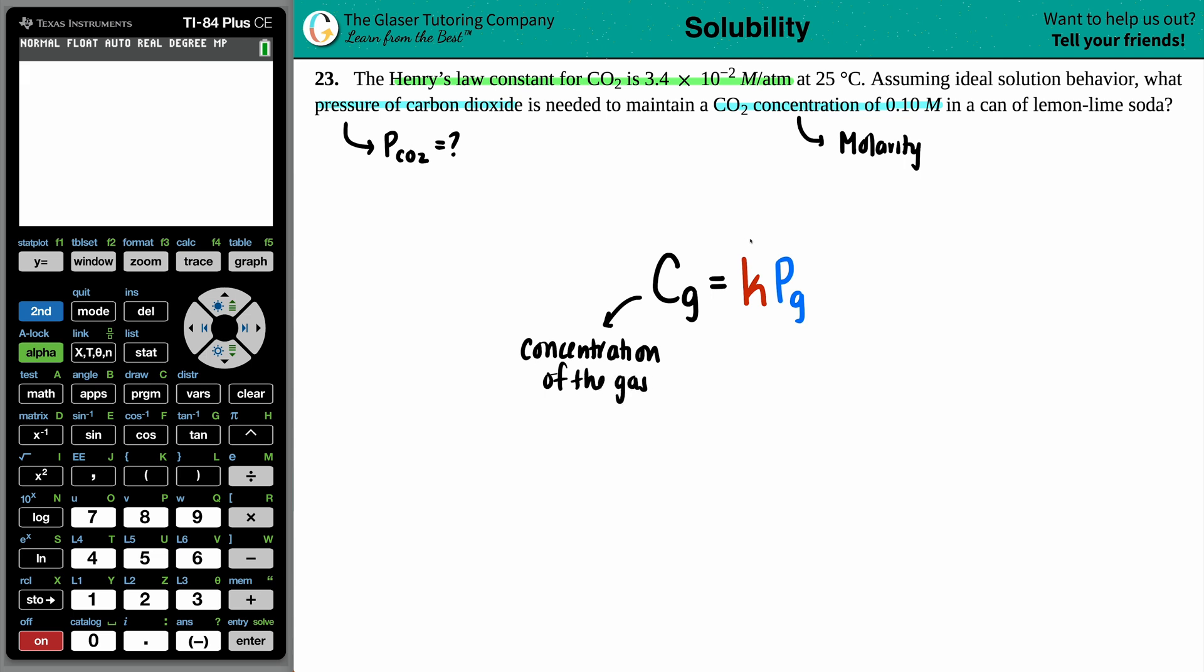The K value is the Henry's Law constant. And the P stands for the pressure of the gas. So PG, pressure of the gas.